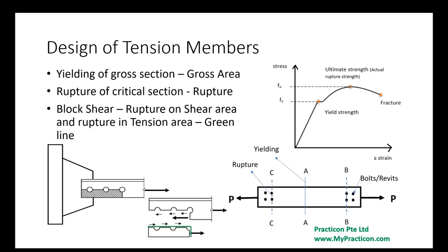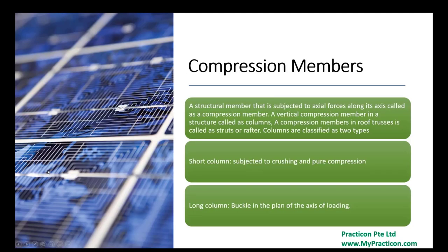Come to the next chapter, compression members. Compression member is one of the structural elements where the member is subjected to compression force. Typically most of the compression members like columns we make it as vertical, we call it as a vertical compression member in a structure. A compression member in a roof truss is called as a strut or rafter.